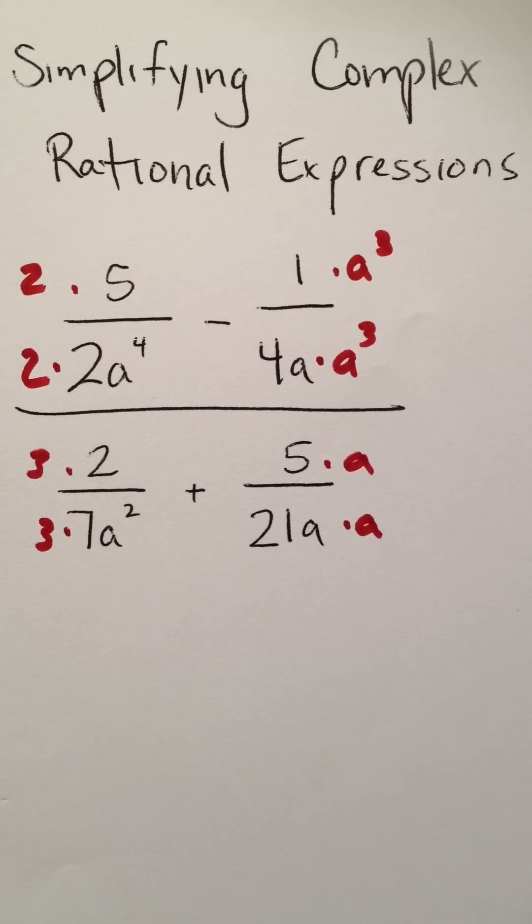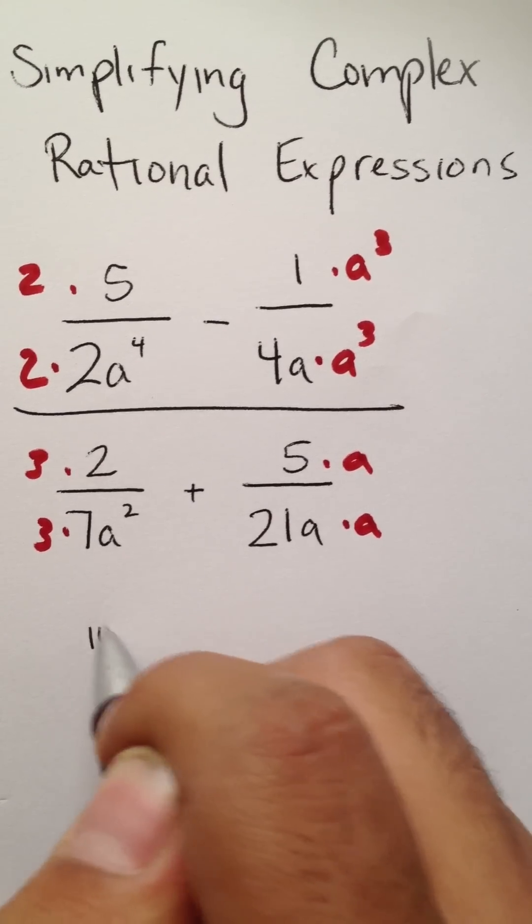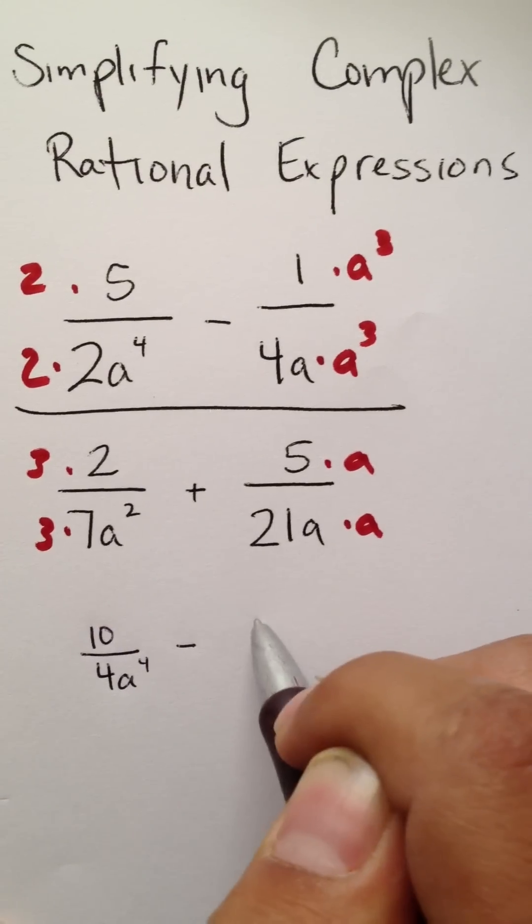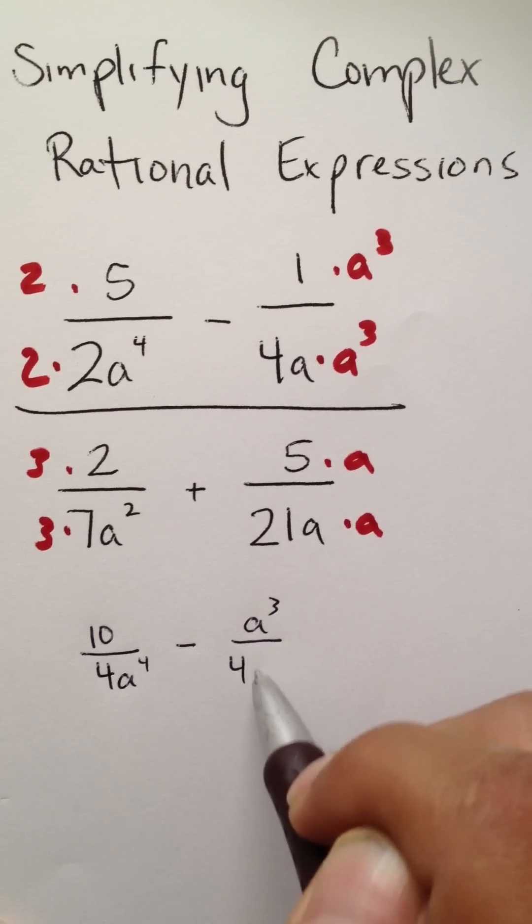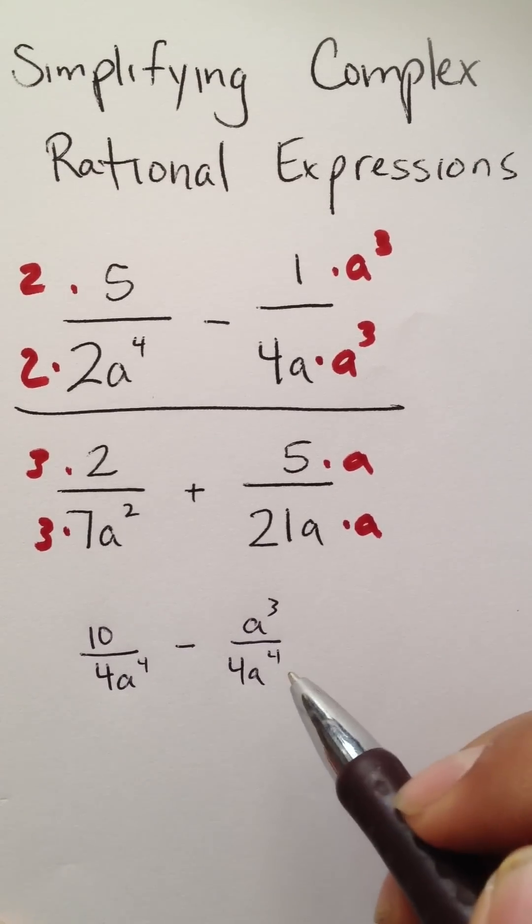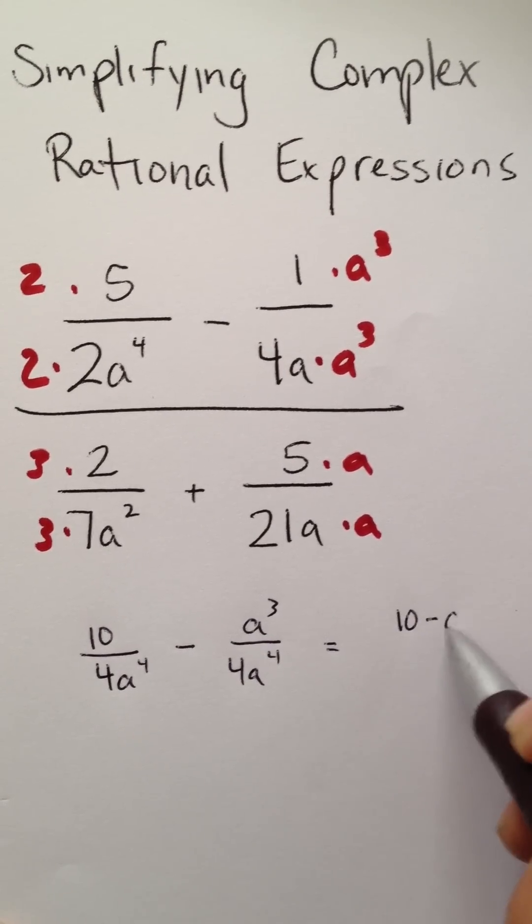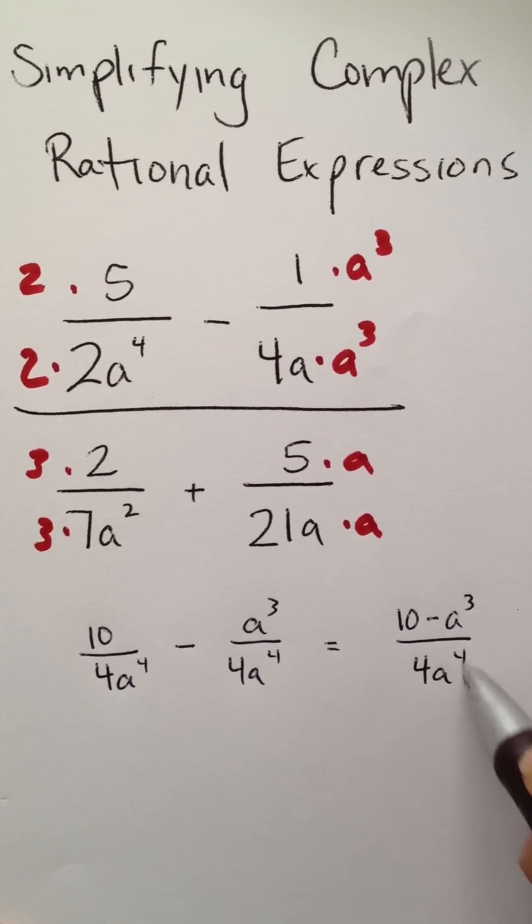At that point, what you're going to end up having is 10 on top of 4a to the fourth power minus a to the third on top of a to the fourth power. This allows you to just have one fraction, which is 10 minus a to the third power on top of 4a to the fourth.